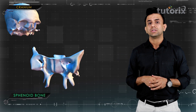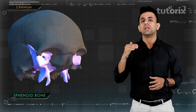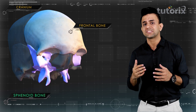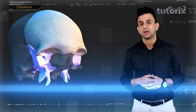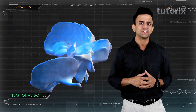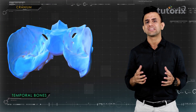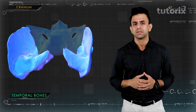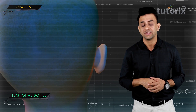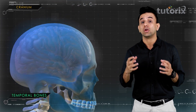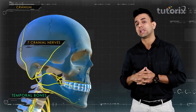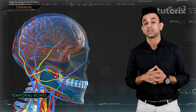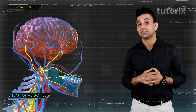The sphenoid bone is present just below the frontal bone, behind the cavity of the eye and nose. The temporal bones are present at the base and sides of the skull. The temporal bone houses the structures of the ear, the lower part of the seventh cranial nerve, and the major blood vessels to and from the brain traverse the temporal bone.